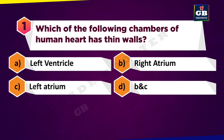Which of the following chambers of the human heart has thin walls? A. Left ventricle, B. Right atrium, C. Left atrium, D. B and C.